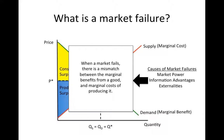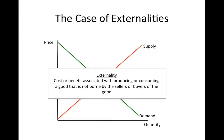We will take a look at this last case in more detail. An externality is a cost or benefit associated with the production or consumption of a good that is not borne by the sellers or buyers of the good. As a result, in the case of an externality, either the market supply curve does not capture all of the costs associated with the production of a good, or the market demand curve does not reflect all of the benefits from consuming a good.